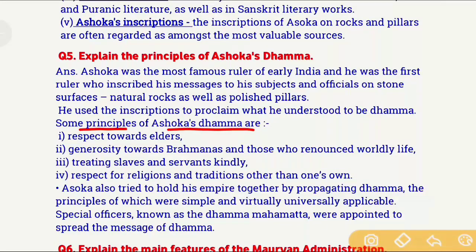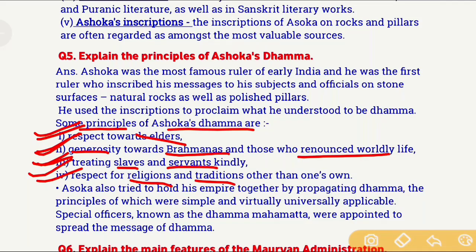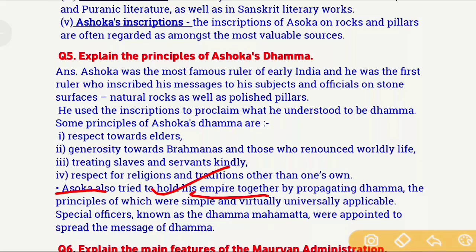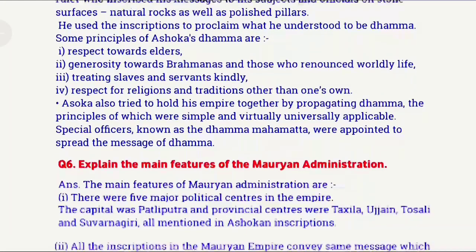Some important principles of Ashoka's Dhamma are: first, we should respect elders; second, we should have compassion towards Brahmanas and those who have renounced everything — the ascetics; third, we should treat slaves and servants kindly; fourth, we should respect not only our own religion and tradition but also others' religions and traditions. Ashoka used the principles of Dhamma to keep his empire united. His principles were simple and universally applicable for every person regardless of religion or caste. Ashoka also appointed special officers called Dhamma Mahamattas to spread the message of Dhamma.